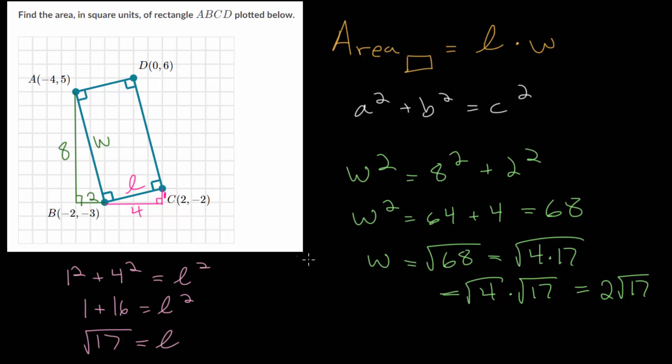And from here, since we know the length and the width, we can actually compute the area. So we'll just say the area is the length, which is the square root of 17 multiplied by the width, which is twice the square root of 17.